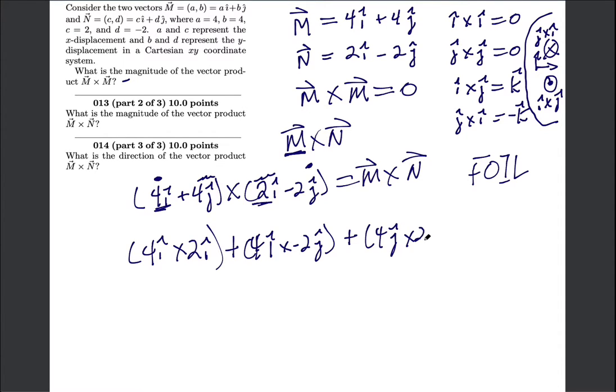So that's 4j-hat crossed with 2i-hat, and then last, which would be this guy here and this guy here. So plus 4j-hat crossed with negative 2j-hat like that. So don't forget: first plus outside plus inside plus last when you're multiplying two quantities like this, but they're cross products so we have to be careful of that.